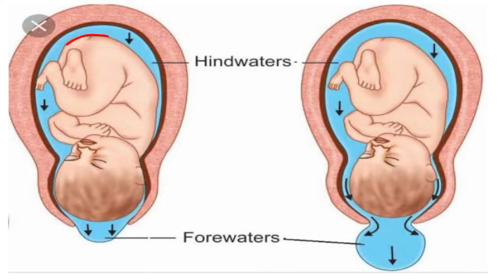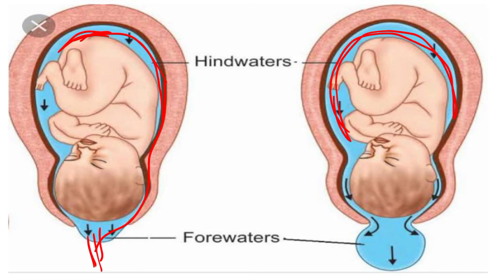This is the detachment of the amniotic fluid membrane. After this, there is a little fluid here. The fluid in front of the baby is called forewaters, and the fluid hidden behind the baby is called hindwaters.